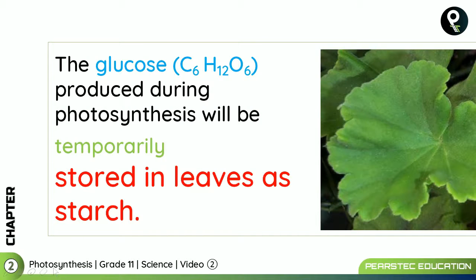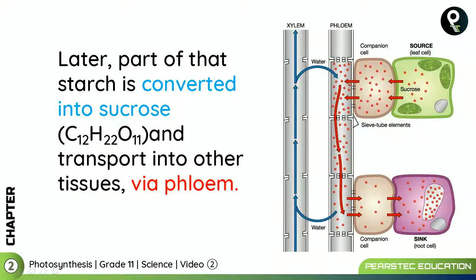The glucose C6H12O6 produced during photosynthesis will be temporarily stored in leaves as starch. If you are looking at a leaf in your garden, you should know that there is glucose in there. Chlorophyll traps sunlight and helps carbon dioxide and water mix together to produce glucose C6H12O6, which is then temporarily stored in leaves as starch.